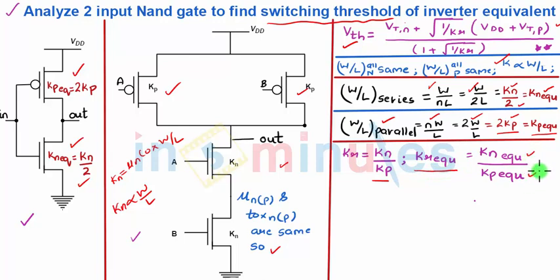What we need to do is we need to substitute the value of Kr equivalent into the expression of switching threshold and because this Kr equivalent has a NAND reduced to an inverter with all the features incorporated in Kn and Kp. The value of switching threshold which we get after substituting and simplifying is the value of switching threshold of a two input NAND gate for its inverter equivalent so it is very straightforward.